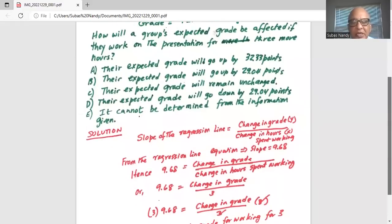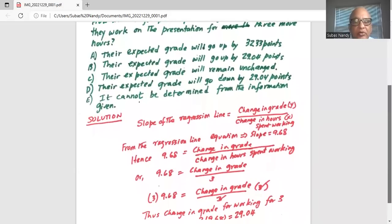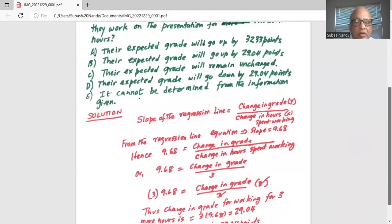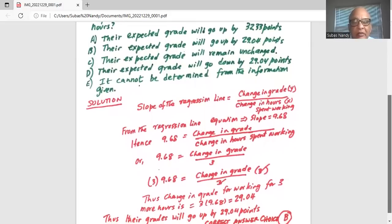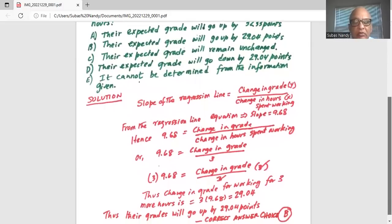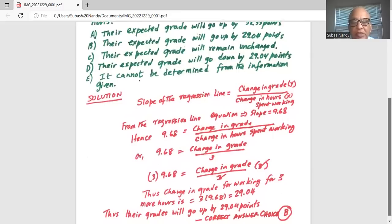So 9.68 equals change in grade divided by 3. Multiply by 3 on both sides of the equal sign to get 3 times 9.68 equals change in grade. The change in grade for working 3 more hours is 3 times 9.68 or 29.04.